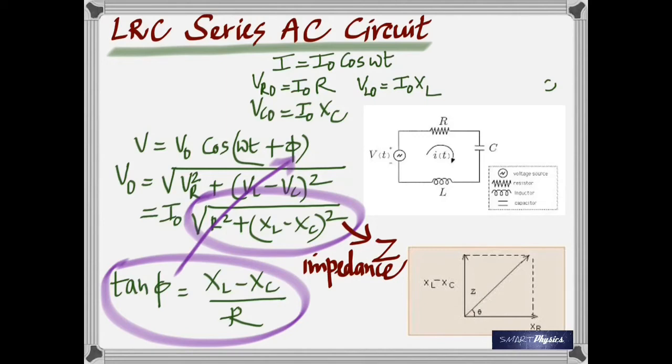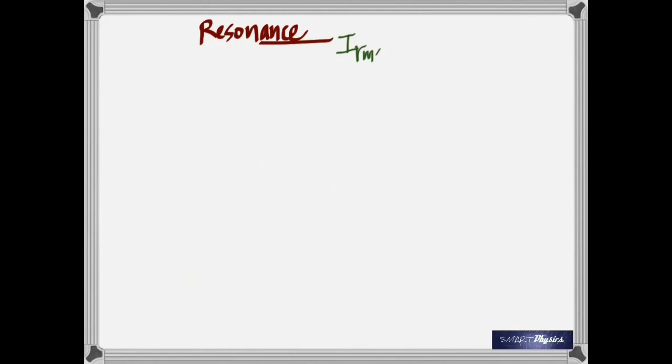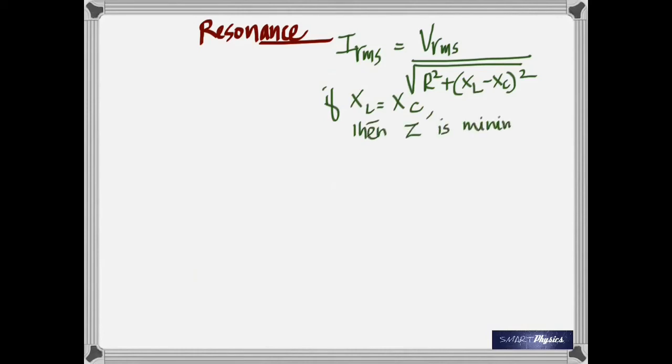Now resonance. We already talked about it. The RMS current at resonance is the RMS voltage divided by Z. At resonance, the inductive reactance becomes exactly equal to the capacitive reactance. If you put X_L equals X_C, then Z is minimum and that means the current is maximum at resonance.